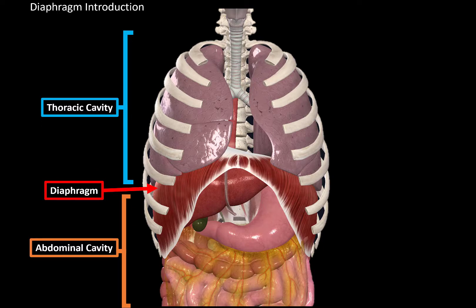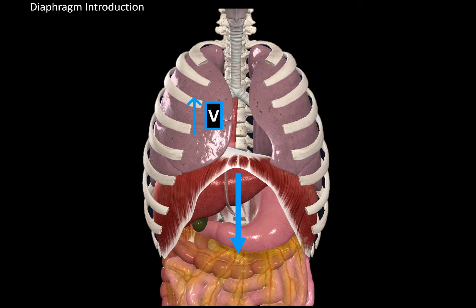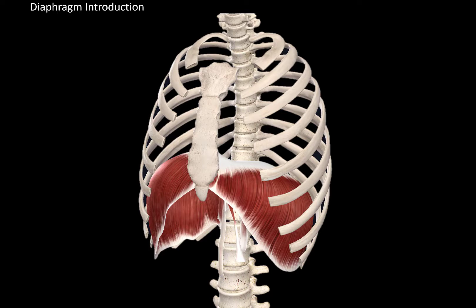Just by looking at the diaphragm, you can see that it consists of two main parts: the central tendinous part, and a muscular part around the central tendinous part. The main reason why we need the diaphragm is because when the muscle fibers contract, they will pull the central tendinous part down. That will increase the volume of the thoracic cavity and decrease the pressure so that air can easily come into the lungs. So the diaphragm is our main muscle of inspiration, one that we can't live without.